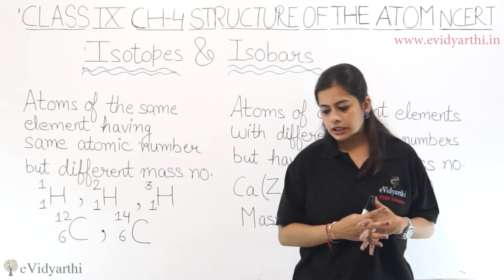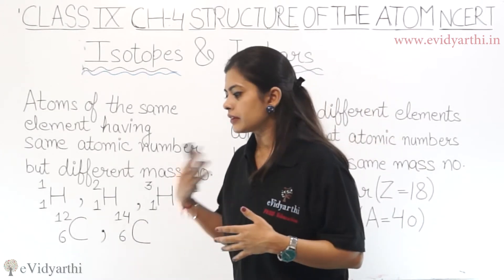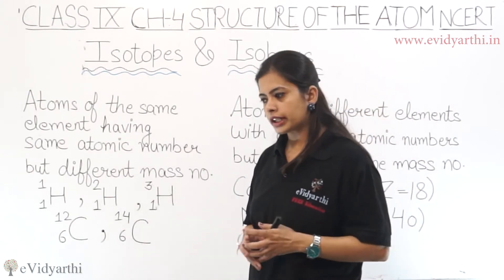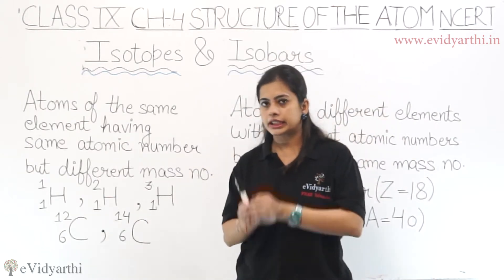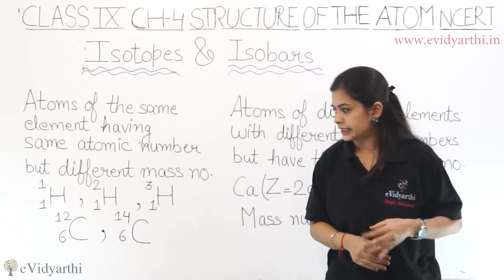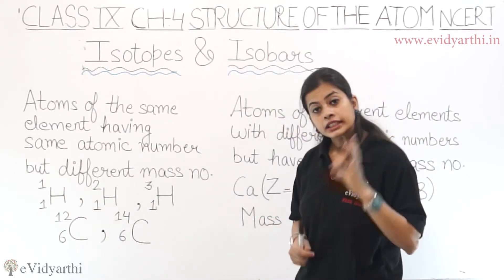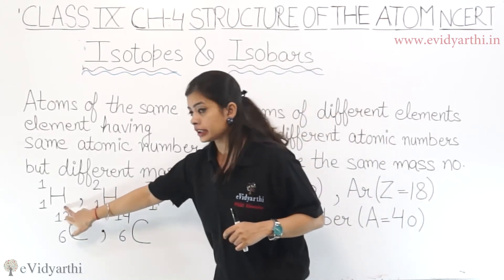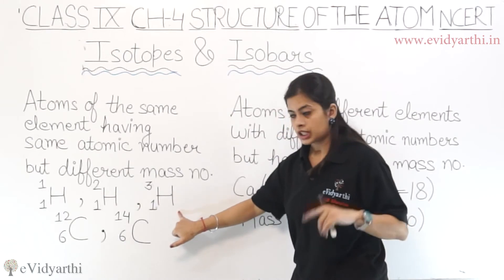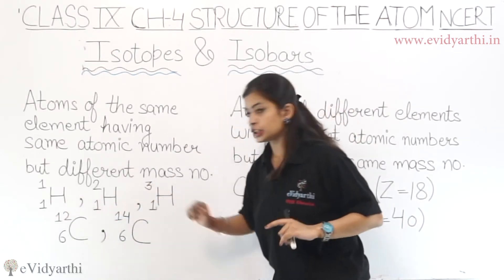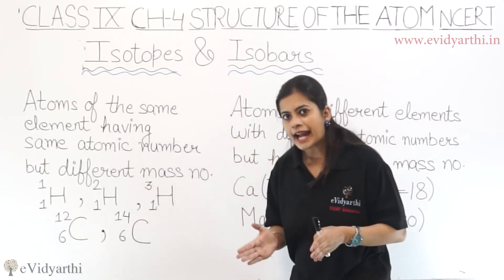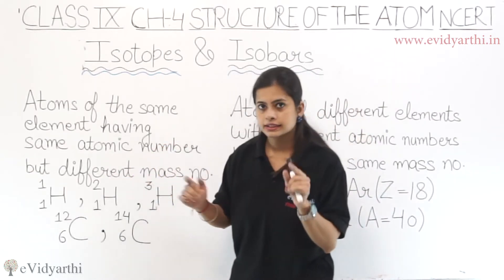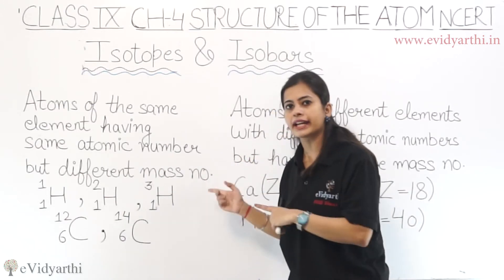For example, hydrogen. When elements were discovered — whether in the hard crust, the atmosphere, or wherever they were found — in many places we found different forms of the same element. In this way, hydrogen also exists in three forms. What are they? Proteum, Deuterium, and Tritium. If you look at the number written below, that is the atomic number — they have the same atomic number, but the mass number is increasing by 1.